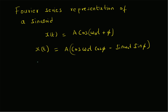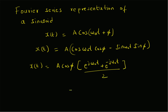Now this expansion can be rewritten using Euler's formulas. x(t) = A·cos(φ)·[e^(jω₀t) + e^(-jω₀t)]/2 minus A·sin(φ)·[e^(jω₀t) - e^(-jω₀t)]/(2j). Here we use the definitions of cos(ωt) and sin(ωt) in terms of complex exponentials.